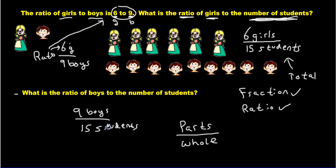Whereas what we've been looking at before was a part of the picture compared to another part of the picture. We're not looking at all of them combined. We're just looking at parts to parts. That's what we've been looking at before. Like 6 to 9.